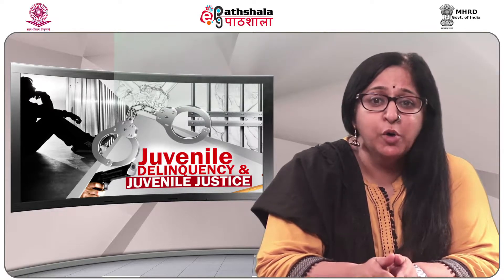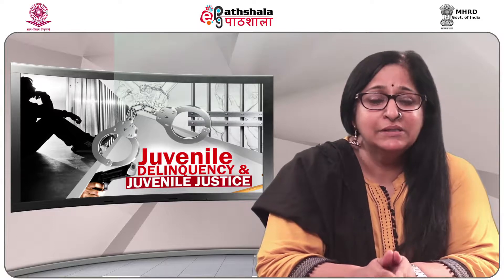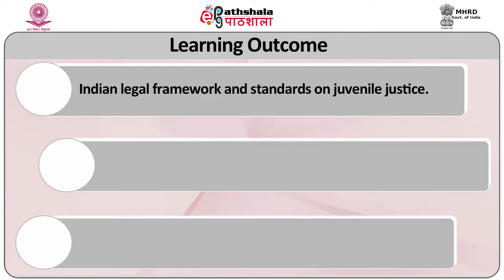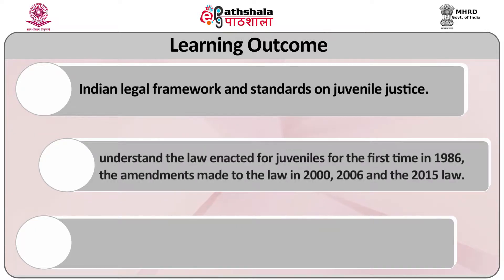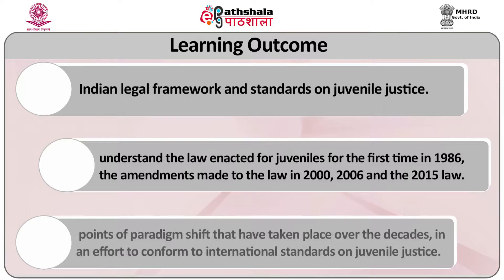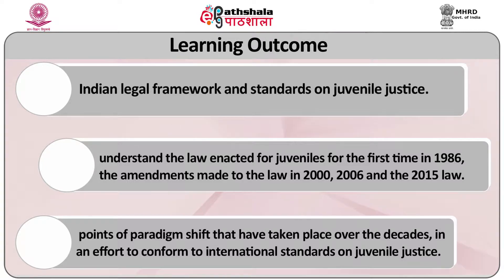In the present module, which is module 2, we will continue the discussion on the Indian legal framework and standards on juvenile justice. We will try to understand the law enacted for juveniles for the first time in 1986, the amendments made in 2000, 2006, and the 2015 law. We will discuss points of paradigm shift that have taken place over the decades in an effort to conform to international standards on juvenile justice.